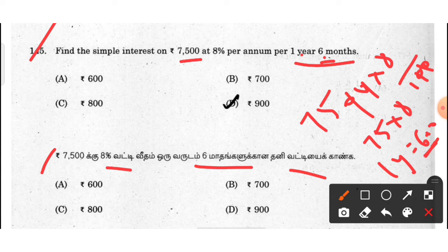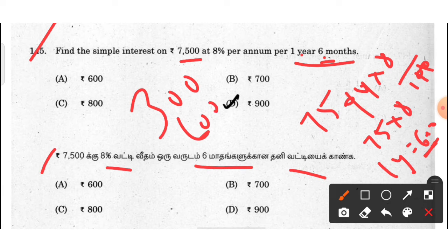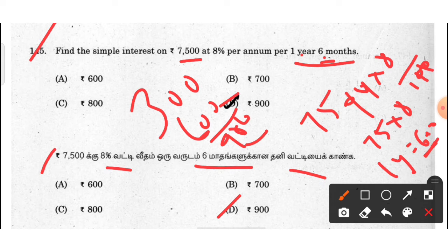This is 600. So this is 300. So 300 and 600, and we will get 900. So 900 is the answer. Option D.